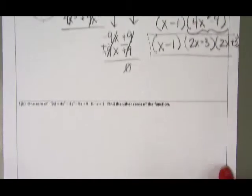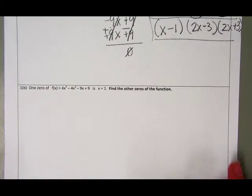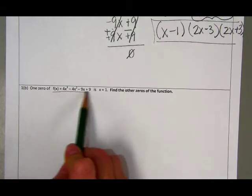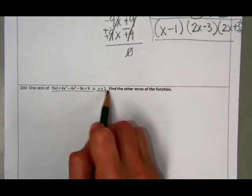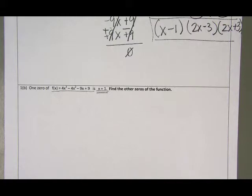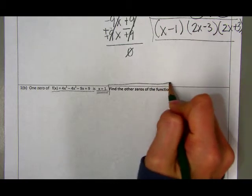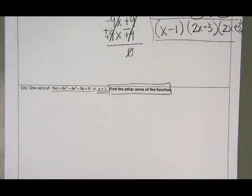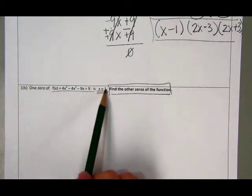Moving on to number 1B. The directions here are a little bit different. We still have the same cubic function as we did in example 1, and we still have the same x equals 1 zero that was given to us in example 1. But the directions are asking us now to find the other zeros in the function.